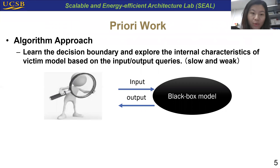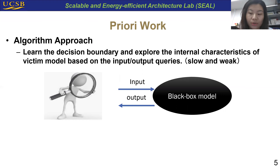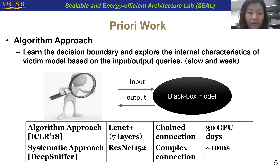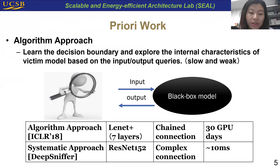There are some algorithm-level works proposed to conduct model extraction. The basic idea is to learn the decision boundary based on the input-output queries. However, algorithm-level work is too slow and too weak for practical use. For example, one work has been proposed to do model extraction for a seven-layer neural network with chained topology, and it needs 30 GPU days to achieve this attack. Such a simple DNN model is barely used in practical cases.